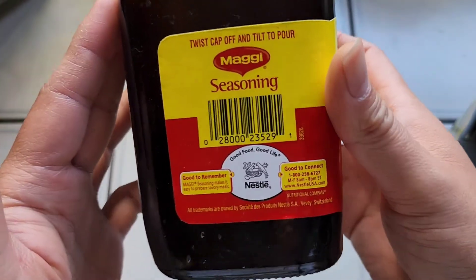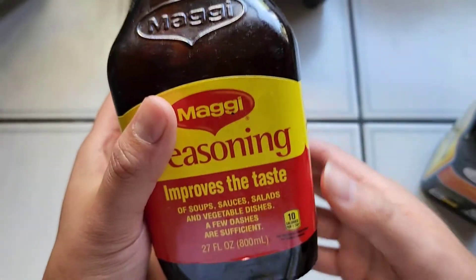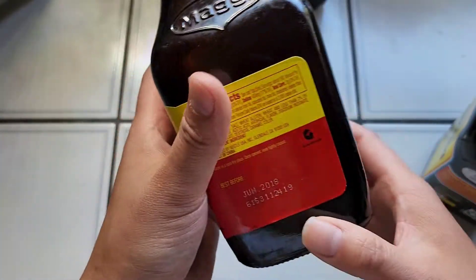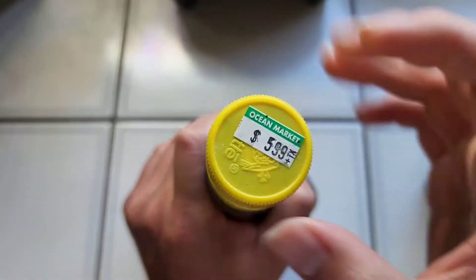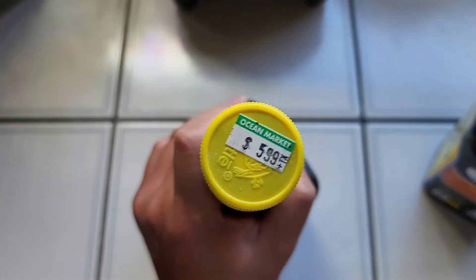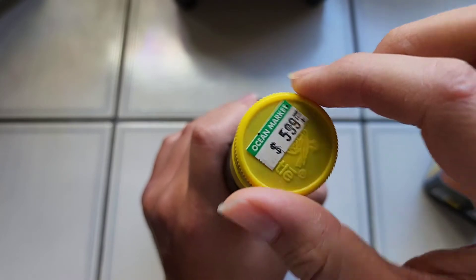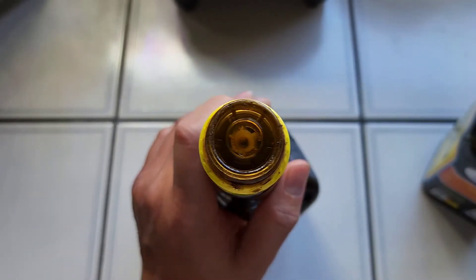This is what the old one looks like. Also by Nestle. This one doesn't say it's from Europe, so I don't know if that makes a difference. This is what the original, look how cheap it was. Six dollars at Ocean Market. That was at my Asian restaurant, or store, sorry, near my house.